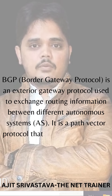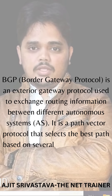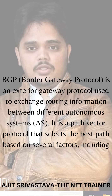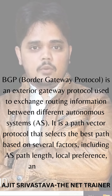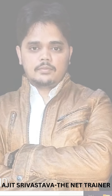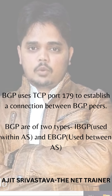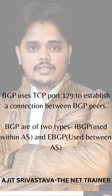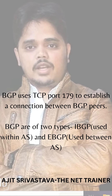It is a path vector protocol that selects the best path based on several factors including AS path length, local preference, and MED values. BGP uses TCP port 179 to establish a connection between BGP peers.